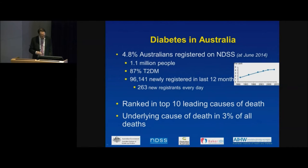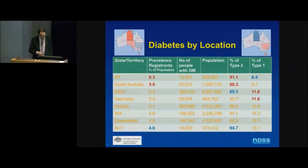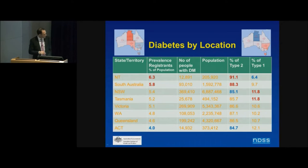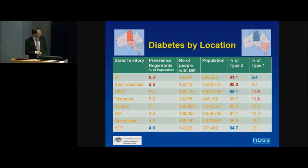Diabetes is ranked in the top 10 leading causes of death around the world and is the underlying cause of death in 3% of all deaths listed. The prevalence varies by state — in the Northern Territory, 6.3% of the population has diabetes with 91.1% being type 2. In South Australia it's similar at 88% type 2. In New South Wales, 5.4% of the population has diabetes with 85% being type 2.